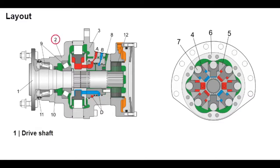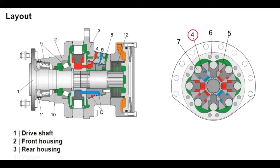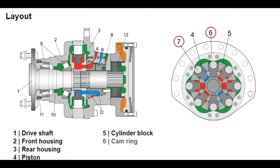The radial piston motor consists of a rotary group with pistons (4), cylinder block (5), cam ring (6) — also called a cam disc — roller (7), and distributor (8). The cylinder chambers (E) are connected to ports A and B through axial bores and the annular channels (D) in the distributor.